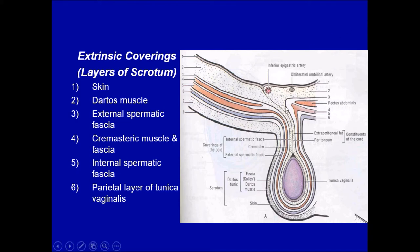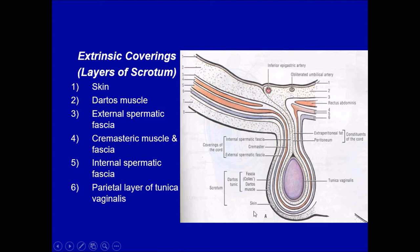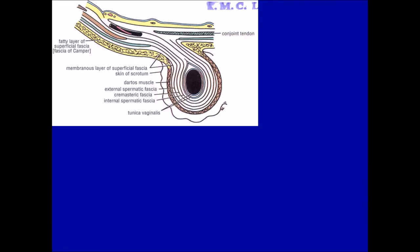Finally, deep to the internal spermatic fascia is a thin layer of peritoneum hanging like a bag — this is the tunica vaginalis, with parietal and visceral layers. The parietal layer forms the innermost layer of the scrotum; the visceral layer forms the covering of the testis. So there are six layers in total forming the scrotum: skin, dartos muscle, external spermatic fascia, cremaster muscle and fascia, internal spermatic fascia, and parietal layer of tunica vaginalis.